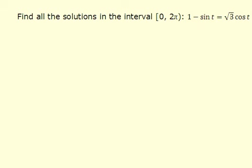In order to solve this problem, we will recognize that we have both sines and cosines. Therefore, I need to find a way to convert from one to the other. The only identity that we know is that cosine squared plus sine squared is equal to 1.